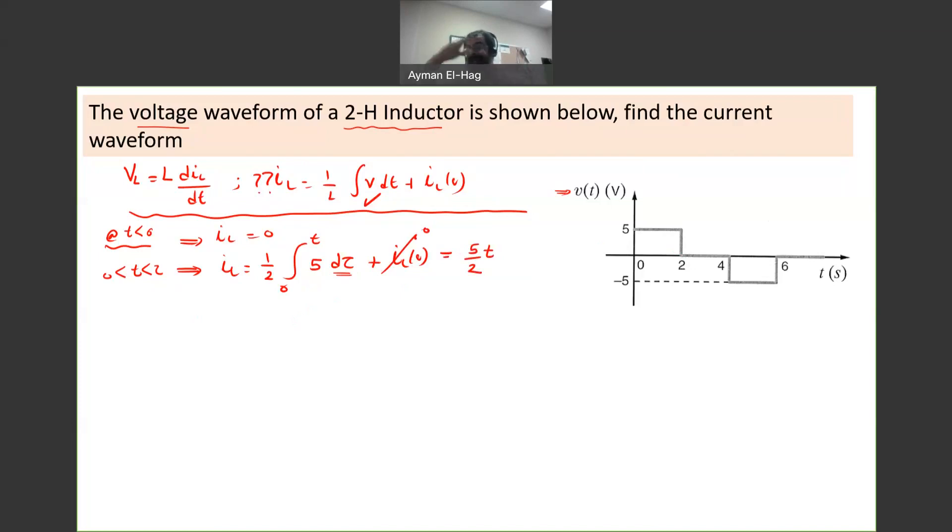Now the second interval, T less than 4, greater than 2. IL equals 1 half, integration from 2 to T. The voltage here is 0, d tau plus IL. IL of what? IL of 2. Because this is my initial condition. For this period from 2 to T, my starting point is 2.